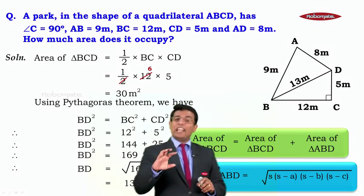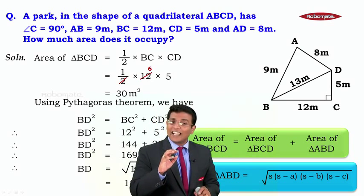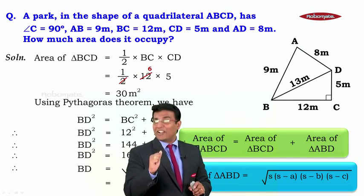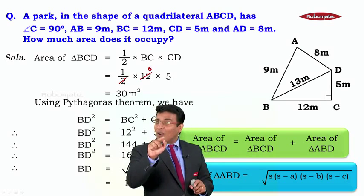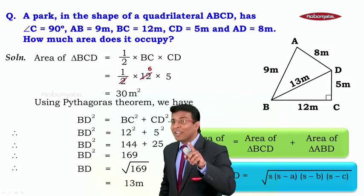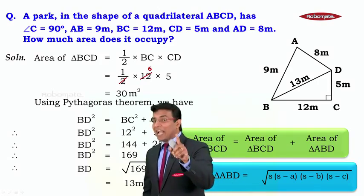Now students, for that triangle ABD have we got the length of all the three sides? Yes. So we know what is A, what is B and what is C. So now can you calculate the area of that? And I know you can do it by Heron's formula. I want you to do it. I will be back.